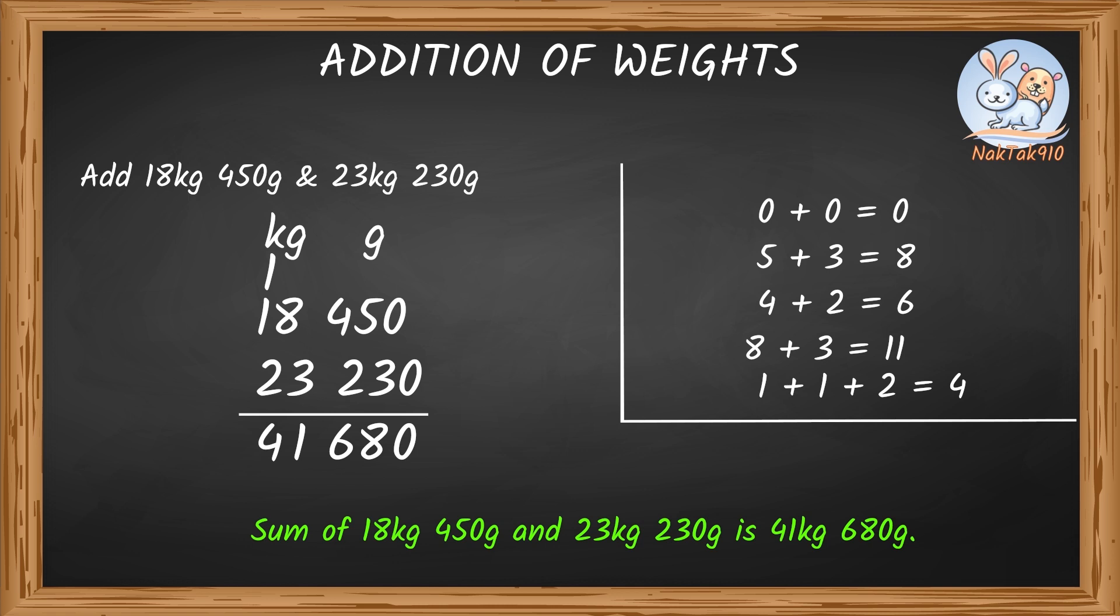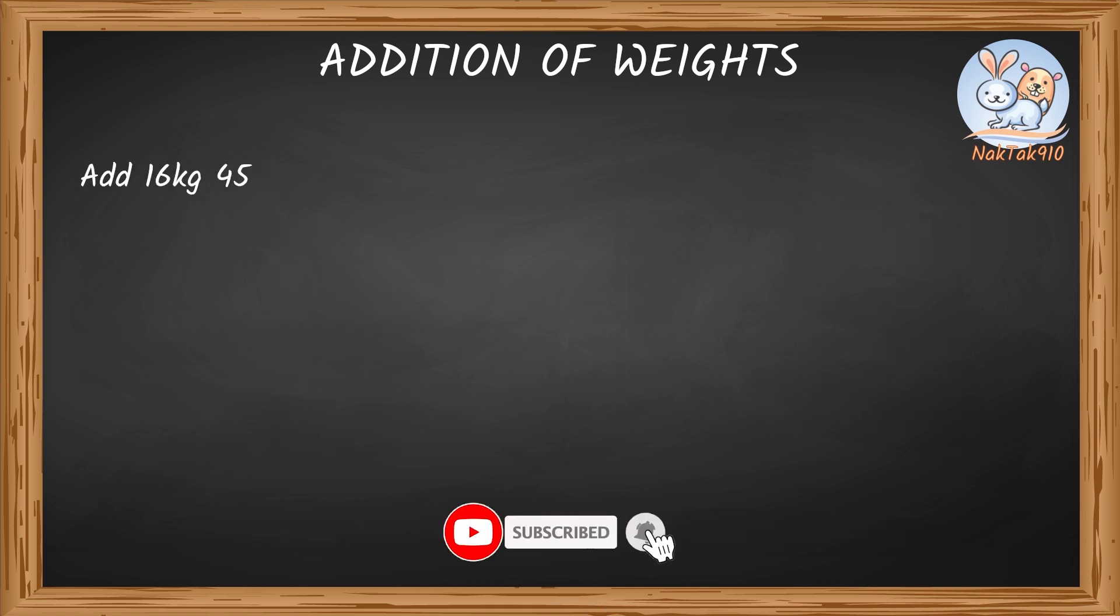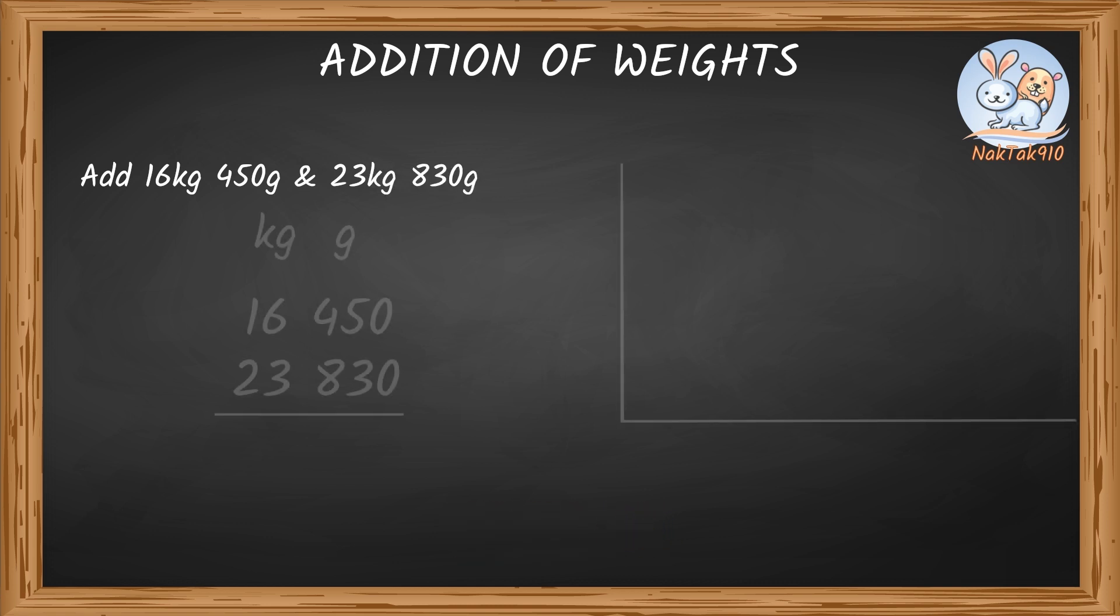Let's take another example. Add 16kg 450g and 23kg 830g. So, first step is to arrange kg and g in columns, one below the other.